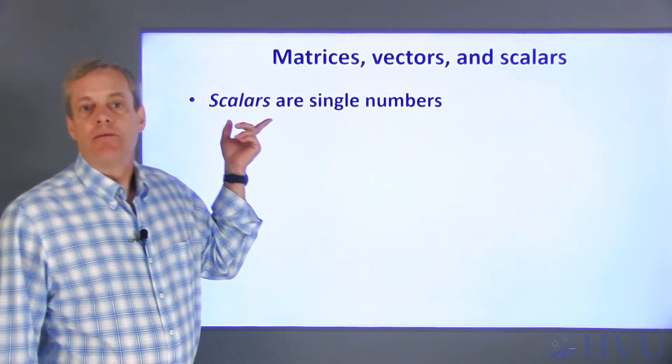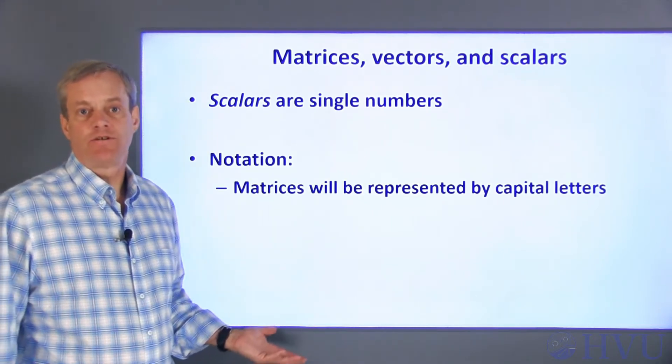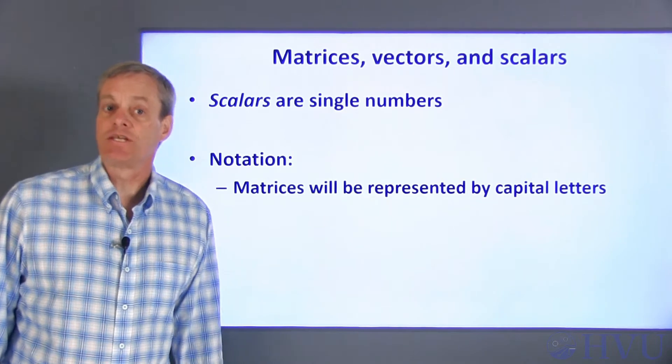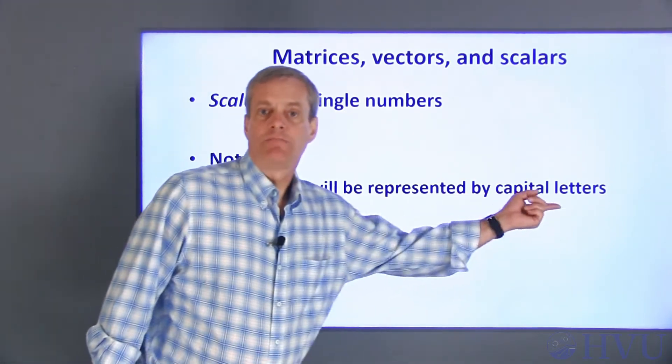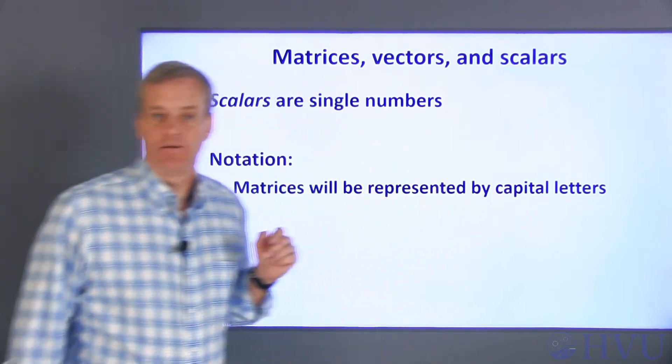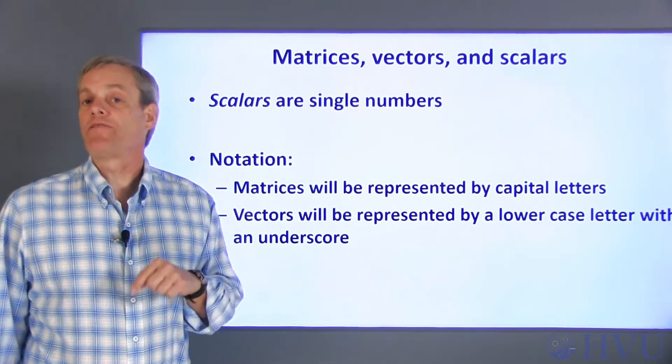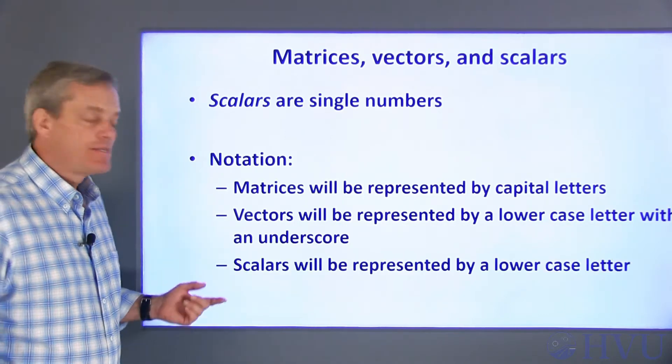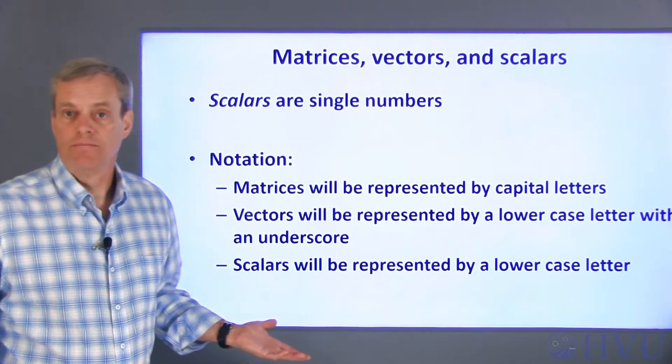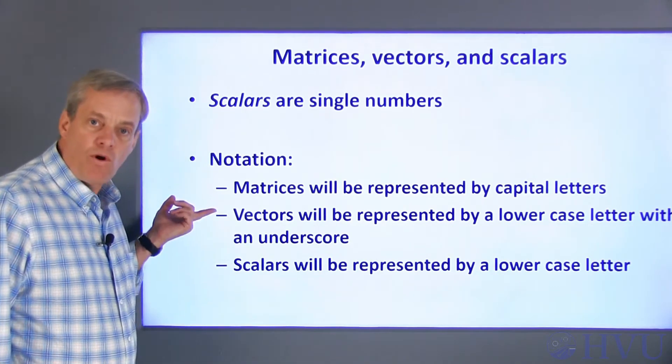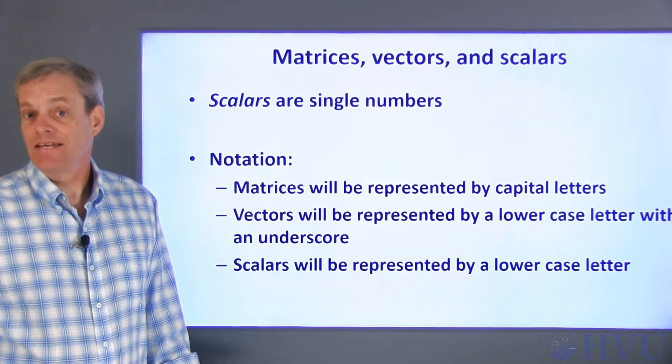Scalars are single numbers. To differentiate between matrices, vectors, and arrays in mathematical expressions, I'll use the following nomenclature. Matrices will be specified by uppercase letters. Vectors will be specified by a lowercase letter with an underscore. Scalars will just be represented by a lowercase letter with no underscore. This notation will be important because the operations being done and the properties of the matrices can depend on their sizes.